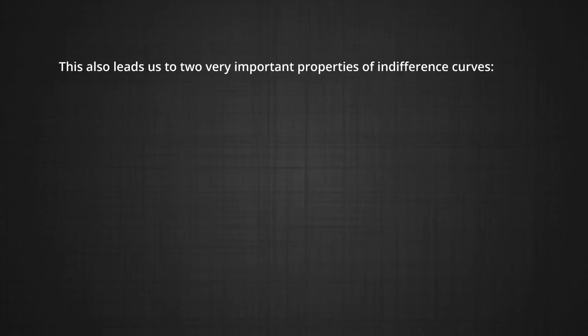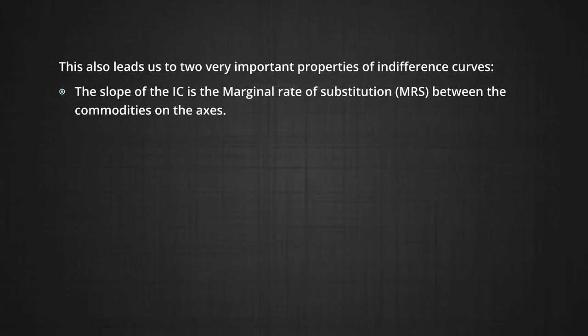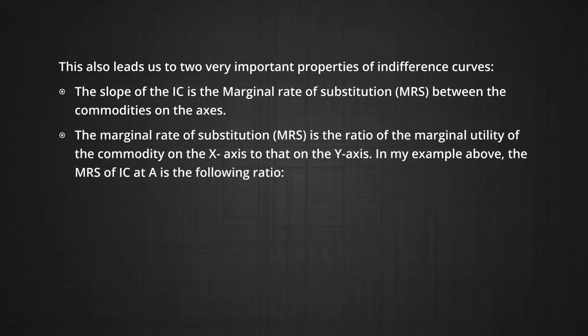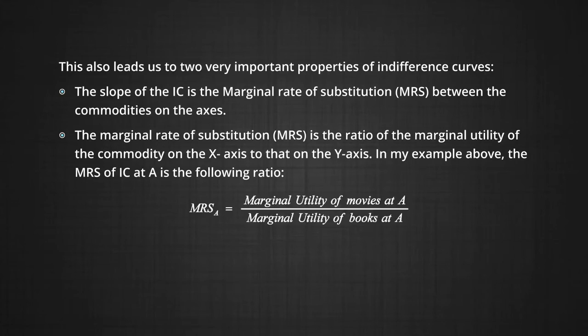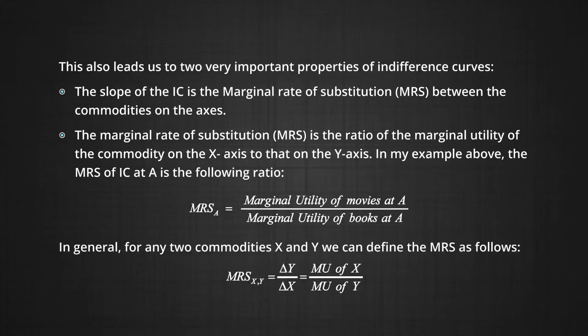This leads us to two very important properties of indifference curves. One, the slope of the indifference curve is the marginal rate of substitution between the commodities on the axes. The marginal rate of substitution is the ratio of the marginal utility of the commodity on the x-axis to the marginal utility of the commodity on the y-axis. In my example, the marginal rate of substitution at A is the marginal utility of movies divided by the marginal utility of books. In general, for any two commodities x and y, we can define the marginal rate of substitution as shown on screen.